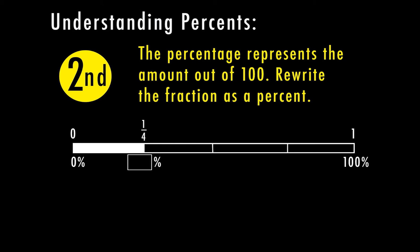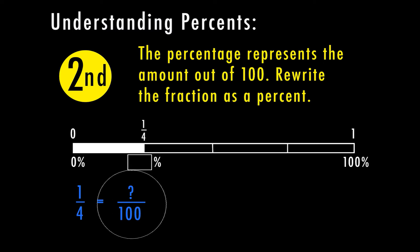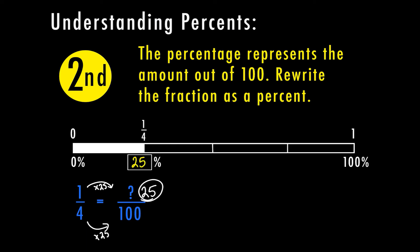Here we have a model going from 0 to 1, which in percent represents 0% to 100%. Using this model, let's solve the problem. Remember, our percent goes over 100. If I change one-fourth to an amount over 100, 4 goes into 100 twenty-five times, so one times twenty-five is twenty-five. When I have a number over 100, that number is the actual percent — so this would be twenty-five percent.